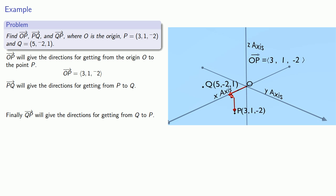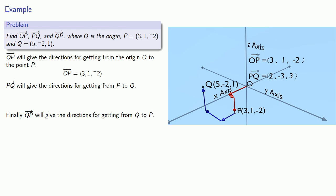What about the vector PQ? Comparing coordinates: P has x-coordinate 3 while Q has x-coordinate 5, so we go 2 units farther parallel to the x-axis. P has y-coordinate 1 while Q has y-coordinate −2, so we decrease by 3, going −3 units parallel to the y-axis. P has z-coordinate −2 while Q has z-coordinate 1, so we go positive 3 units parallel to the z-axis. Our directions for getting from P to Q correspond to the vector (2, −3, 3).